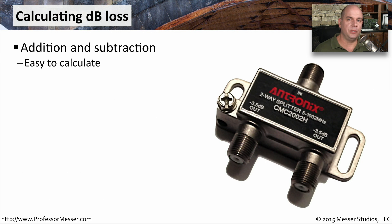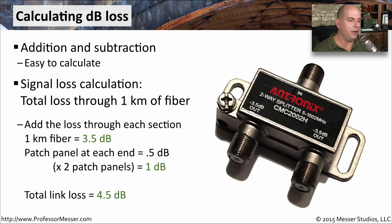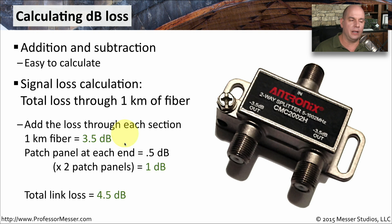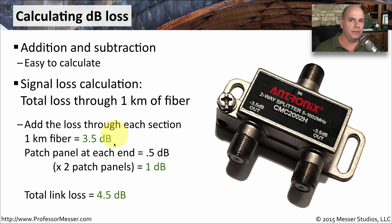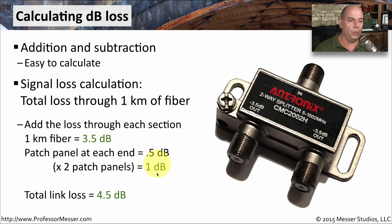The calculation of decibels is pretty simple — it's addition and subtraction. Let's go through a scenario where we are calculating signal loss through one kilometer of fiber. As the signal goes through this fiber through a single kilometer, we're going to lose about 3.5 decibels per kilometer. So for one kilometer, we'll add 3.5 decibels of loss. When we are connecting these to the patch panels on both sides, that particular connector is also losing a bit of signal just by having the connector on the fiber. On each end, each patch panel loses about half a decibel of signal, which means for both ends we're also losing an additional one decibel.